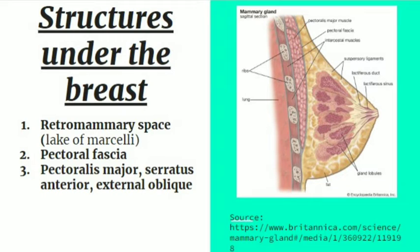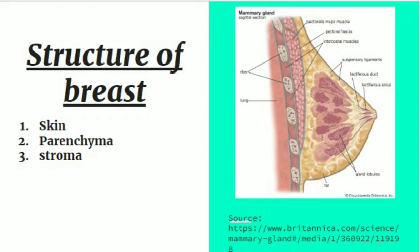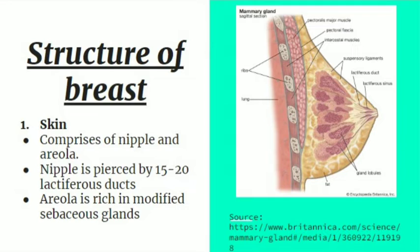The structure of the breast is composed of three parts: skin, parenchyma (the functional part), and stroma (the connective tissue part). The skin is the more superficial part of the breast, comprising the nipple and areola. The nipple is a conical projection, and the areola is the pigmented area around the nipple. The nipple is pierced by 15 to 20 lactiferous ducts.